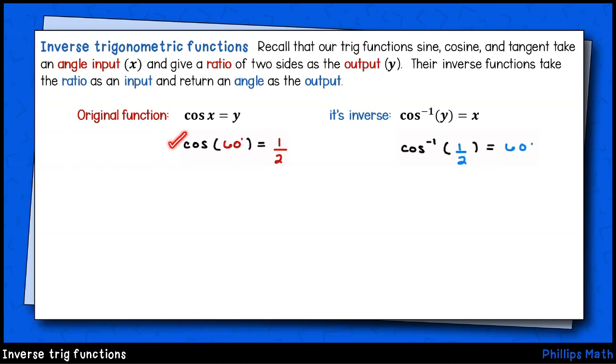Here's a quick example. Cosine of 60 degrees is 1 half. In other words, the ratio between the side adjacent to a 60 degree angle and the hypotenuse of the triangle is 1 over 2.